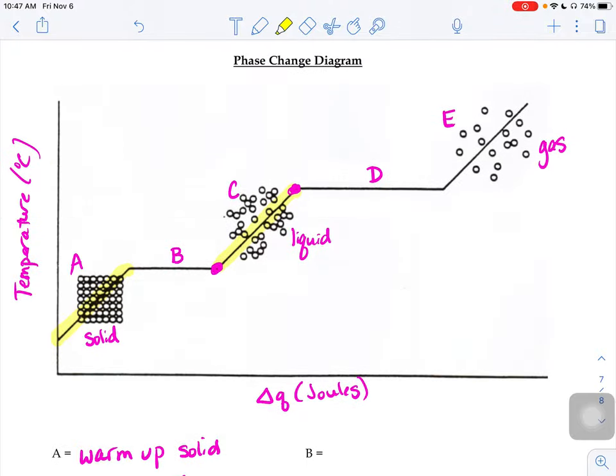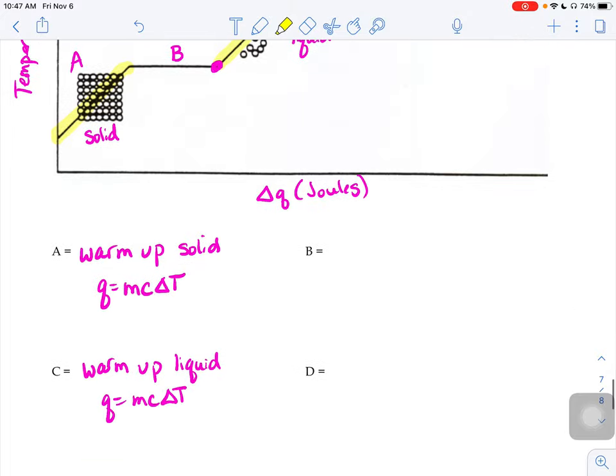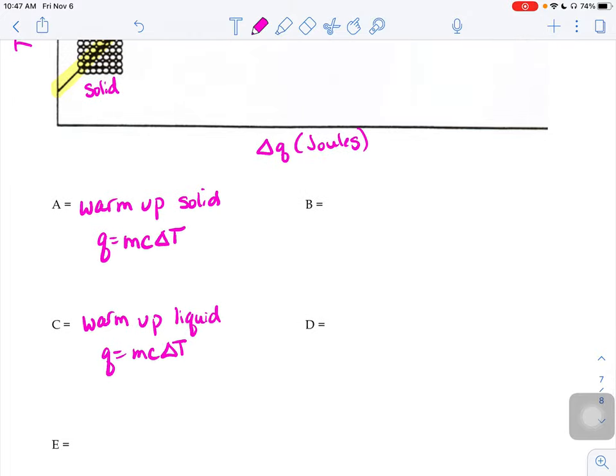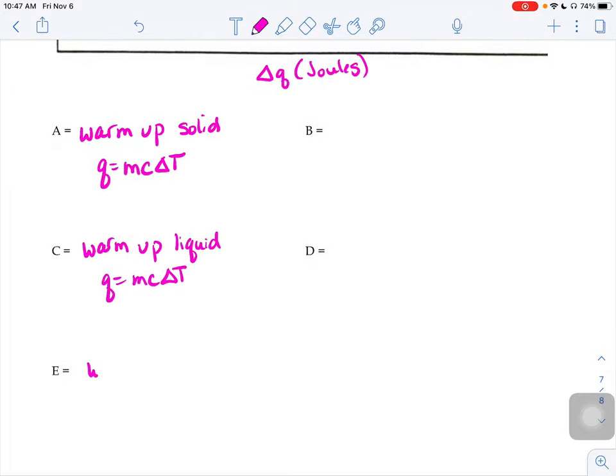And then for E, same deal. It stays a gas the whole time. It's just that the temperature of that gas is changing. So we're warming up the gas. We could use our Q equals MC delta T equation, and we would just use the gaseous form of C.